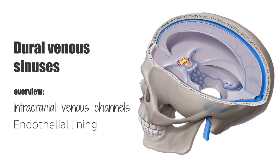These venous channels are also valveless. In other words, unlike most veins, the dural venous sinuses do not contain valves, which allows for bidirectional blood flow within these vessels. So now you have a brief description as to what the dural venous sinuses are — let's get back to looking at the petrosal sinuses.